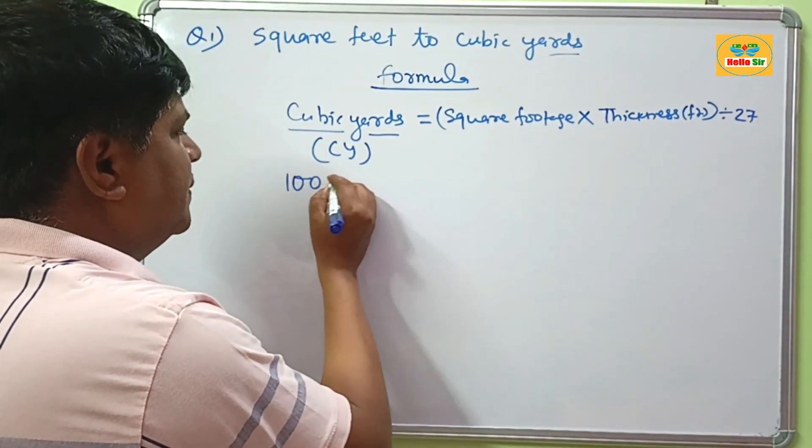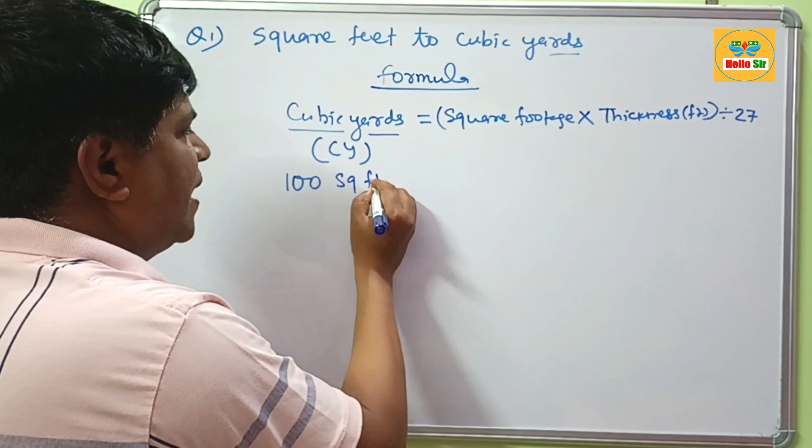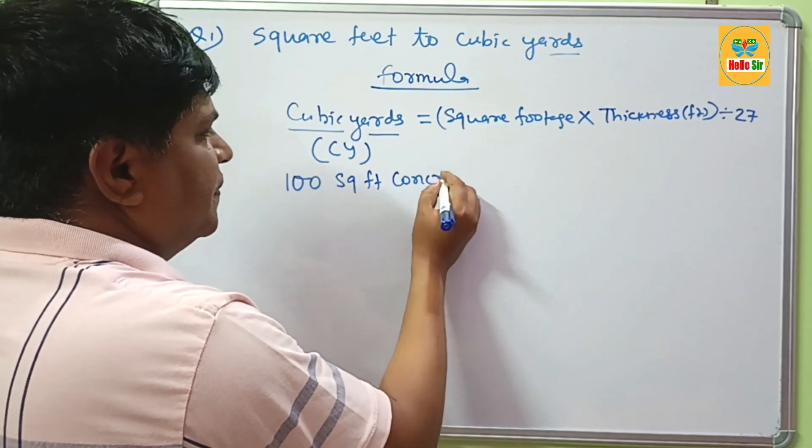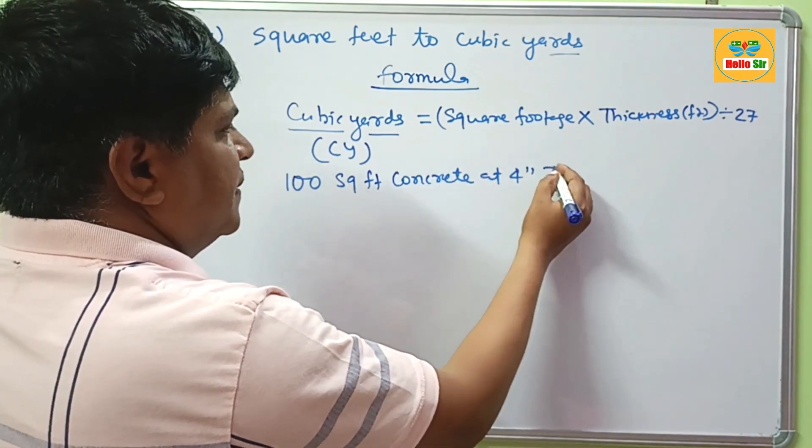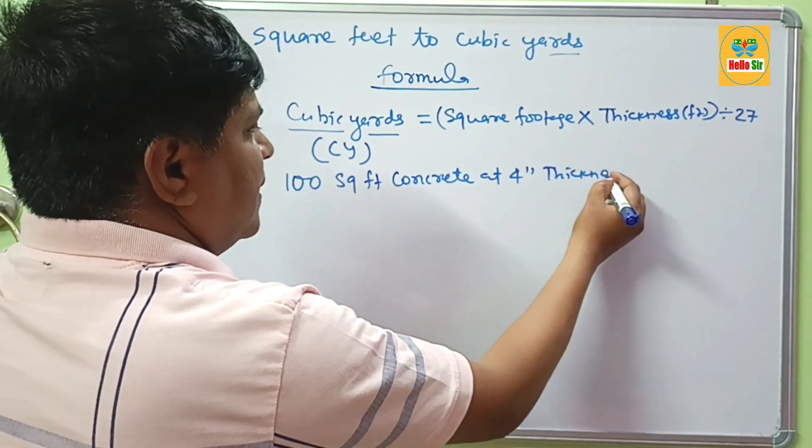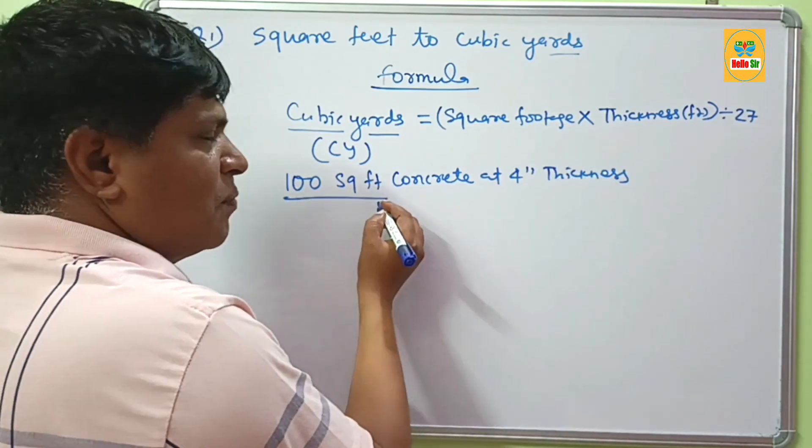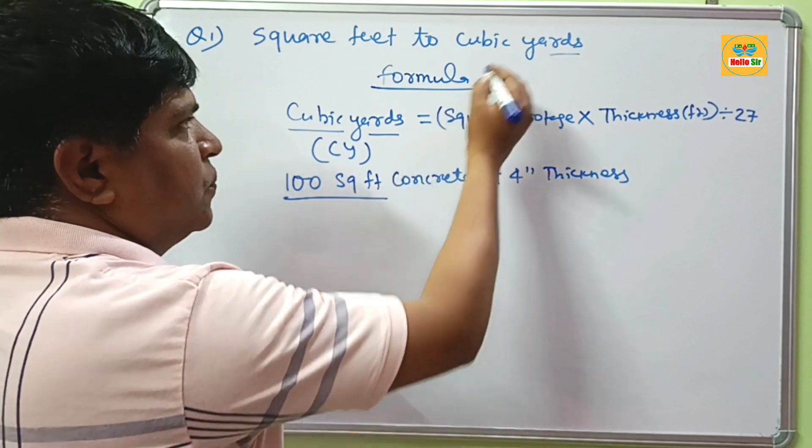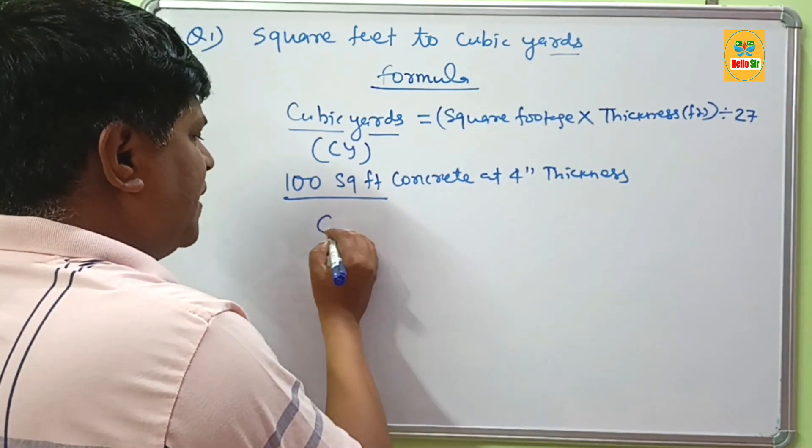If you have 100 square foot concrete at 4 inch thickness, and you have to convert 100 square feet to cubic yards, use the simple formula: